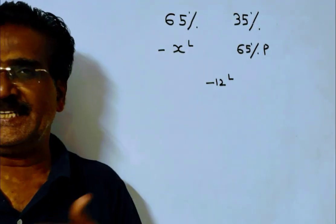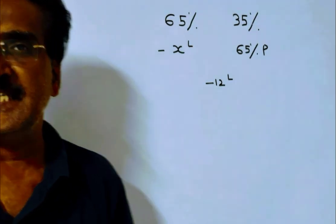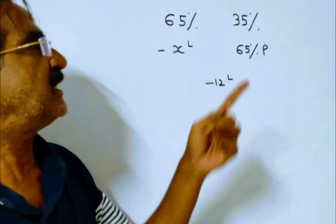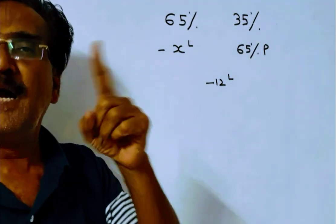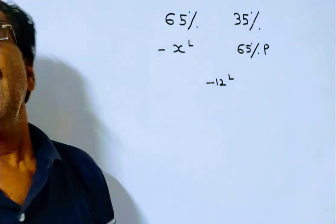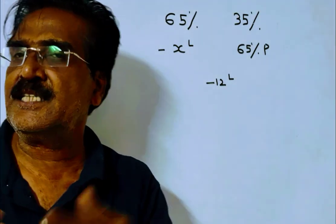Hi friends, good morning. Please look at the next problem in profit and loss. The problem is given in the description box. Here, 35% of the goods are sold at 65% profit, and the remaining goods are sold at x percent loss. The overall loss is 12%. What is the value of x?